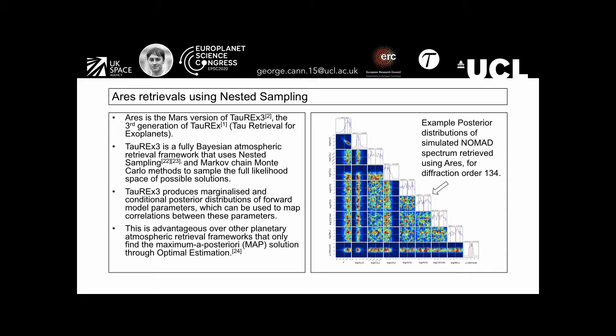TAREX 3 is an atmospheric retrieval framework that uses nested sampling and MCMC methods to sample the full likelihood space of possible solutions. TAREX 3 can produce marginalized and conditional posterior distributions, which can be used to map correlations between these atmospheric parameters, for example, temperature, volume, mixing ratios of certain trace gases such as methane. This is advantageous over other planetary atmospheric retrieval frameworks that only find the maximum a posteriori solution through optimal estimation.